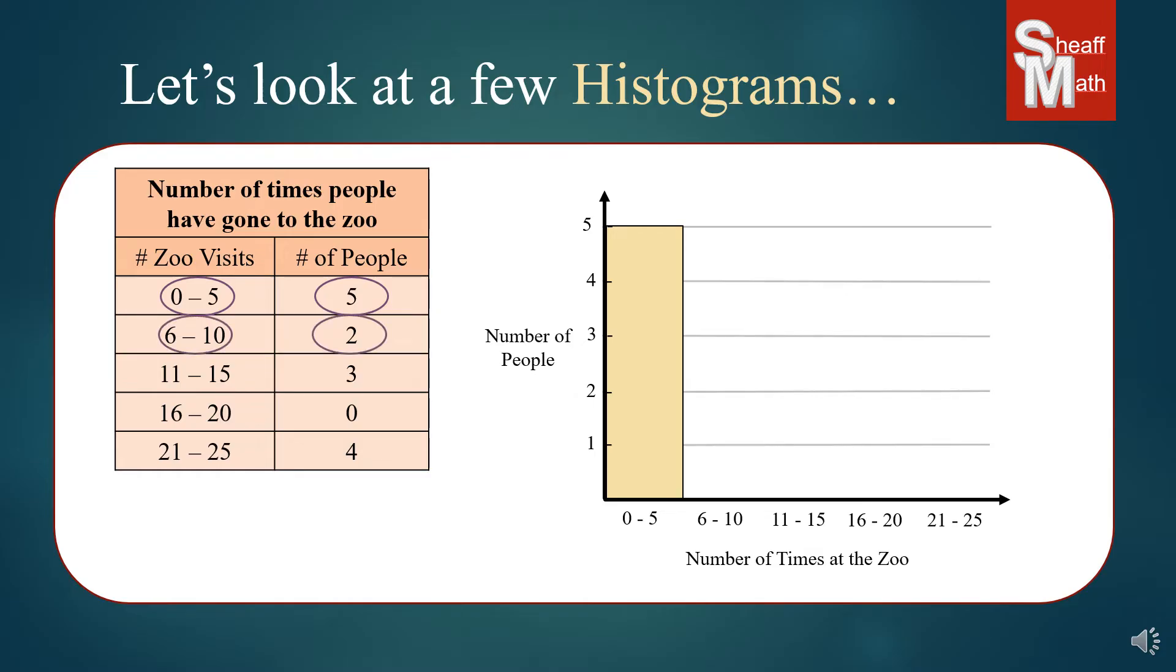Then, we have six to ten, we have two of them, so we put a bar next to there, and then eleven to fifteen, we have three of them, and so we put our bar up there. Sixteen to twenty, we have zero, and so nothing goes there. And for the twenty-one to twenty-five, which is four, we put it up there. So for the sixteen to twenty, you don't put a bar there. There aren't any people in that category.